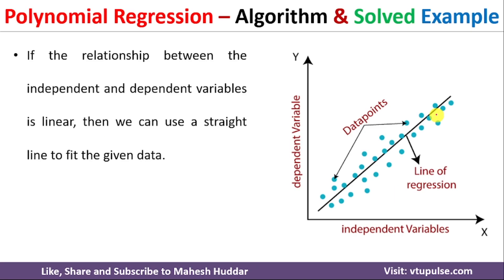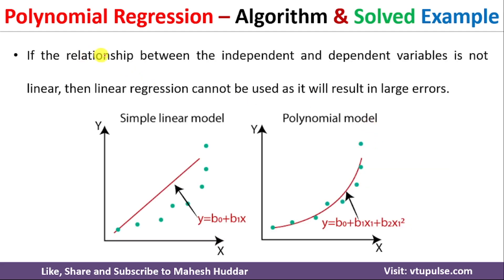In simple and multiple linear regression models, the independent and dependent variables are linearly dependent on one another. The data is linearly distributed, and in such a case we can draw a straight line to fit the given data. But if the relationship between independent and dependent variables is not linear, we cannot use linear or multiple linear regression models.